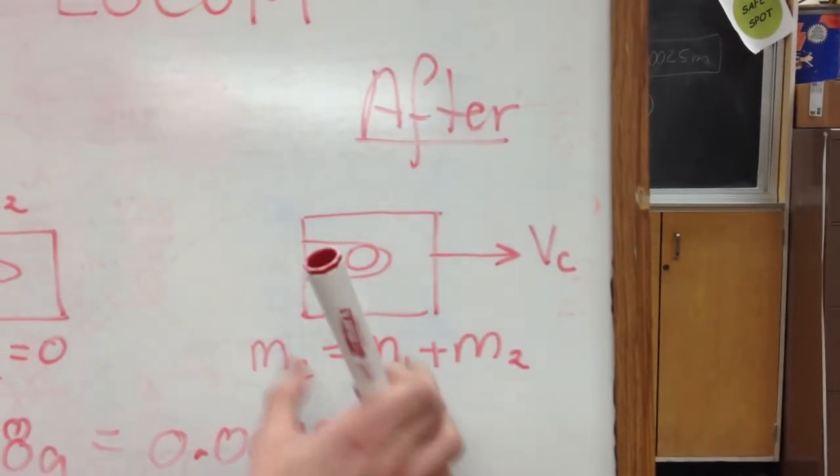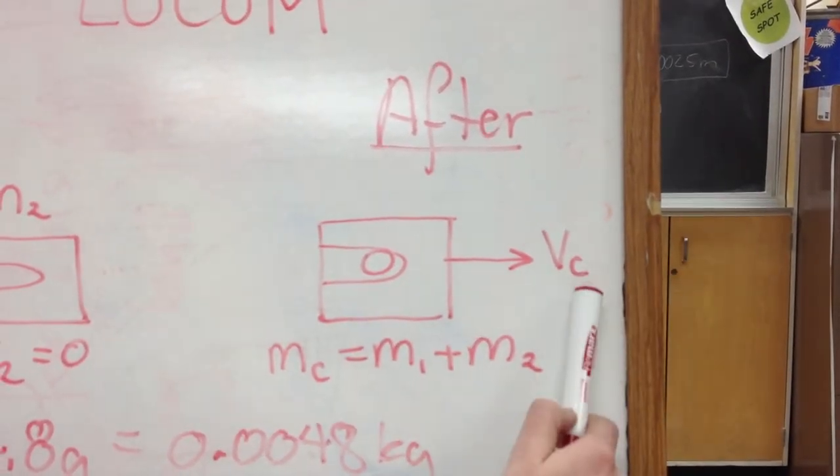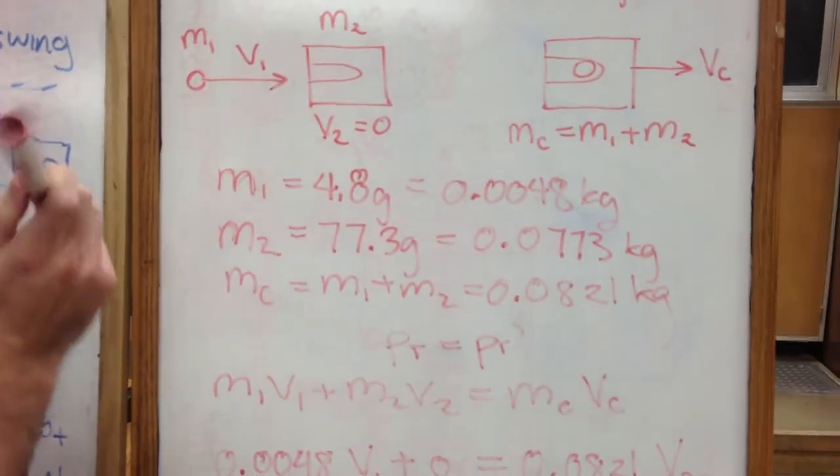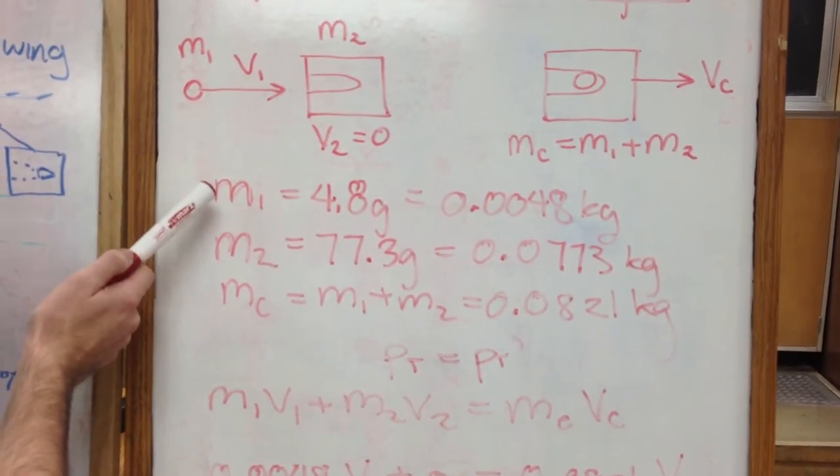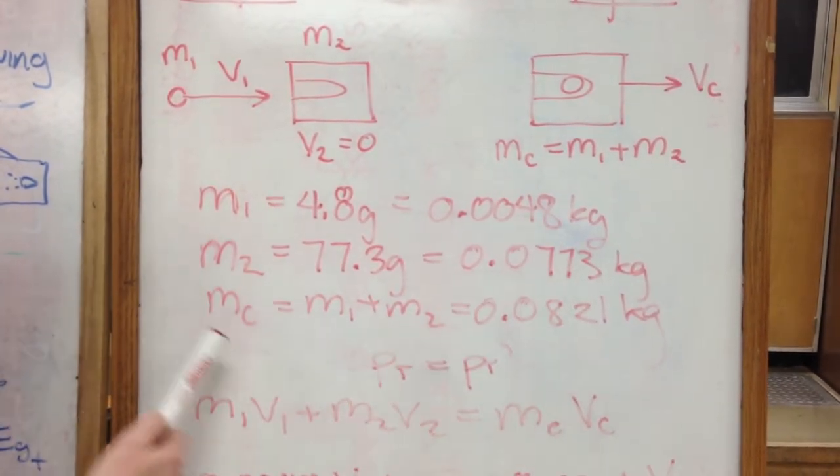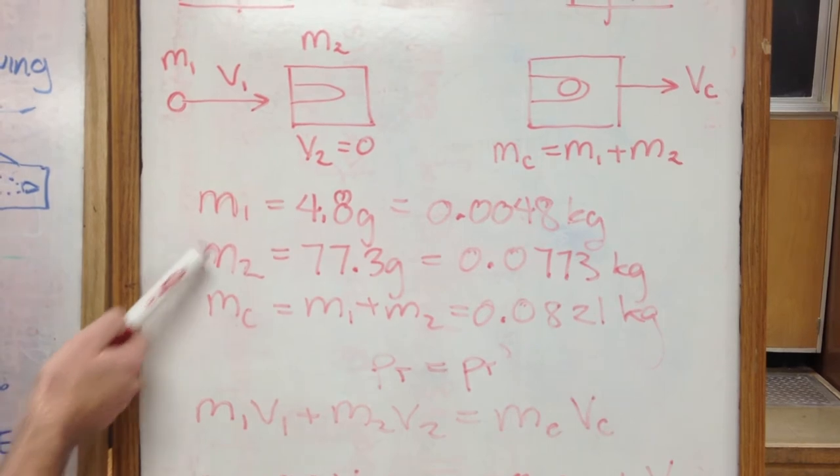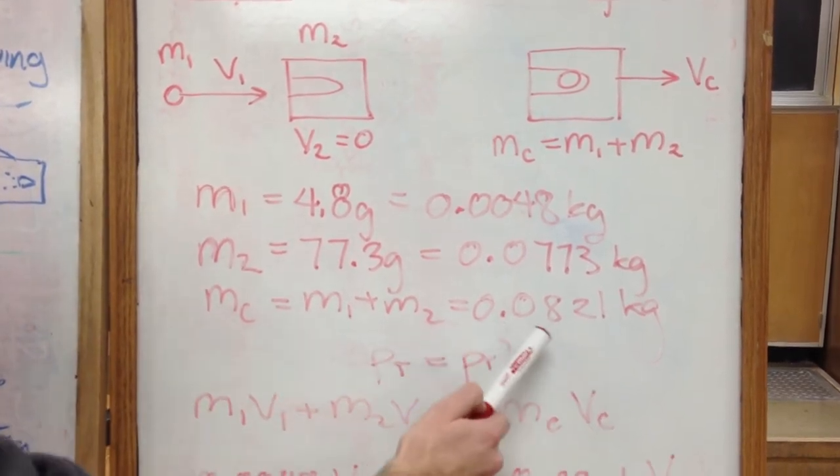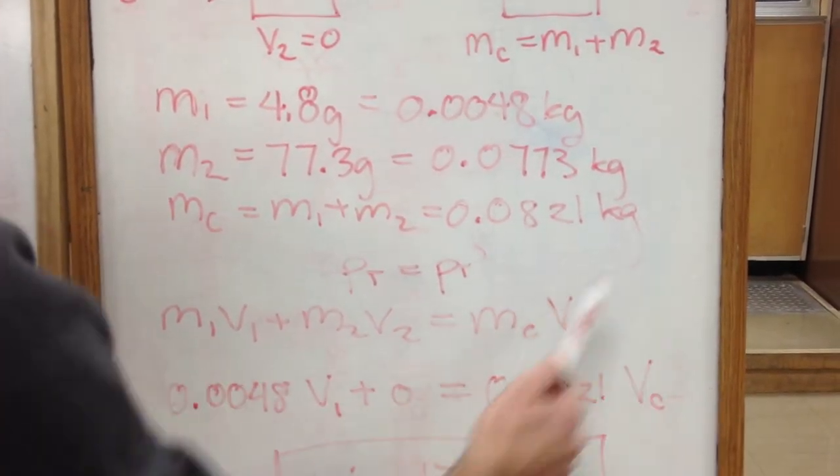The masses we calculated using the scales, the mass of the pellet is 4.8 grams, or 0.0048 kilograms. We know the mass of the box, and the combined mass is 0.0821 kilograms.